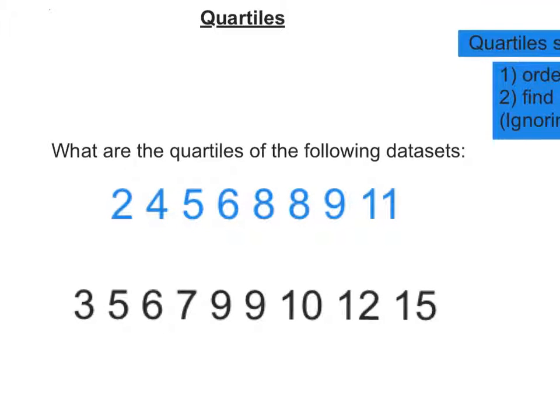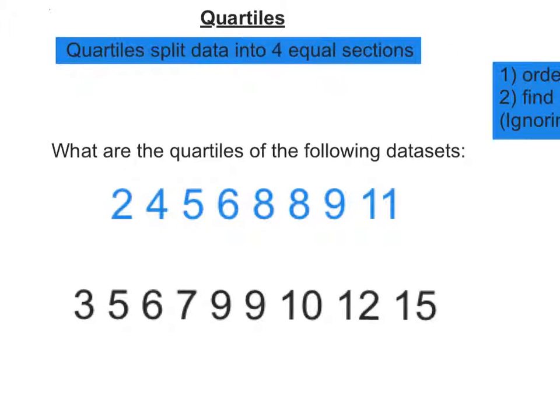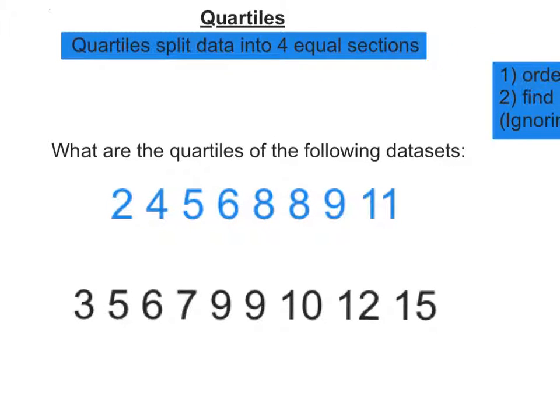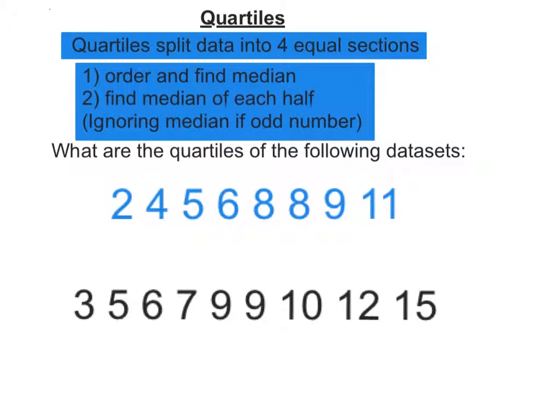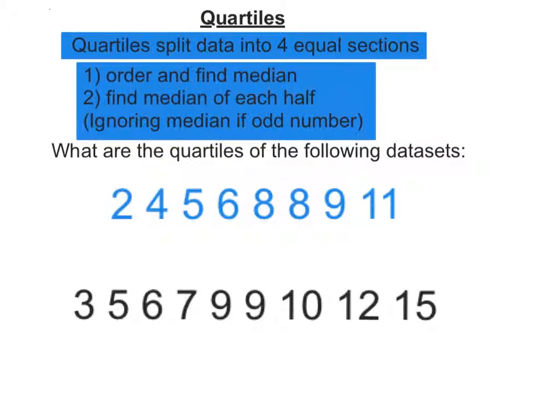Quartiles of a data set. What are quartiles? Quartiles split data into four equal sections. And how do we do that? We order the numbers and find the median, and then find the median of each of the halves, and they give us the three quartiles.